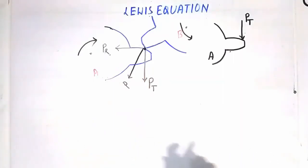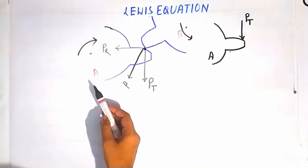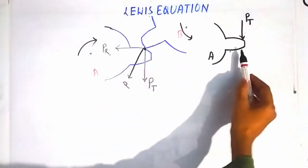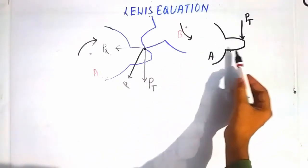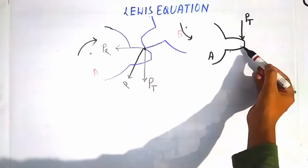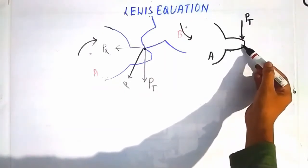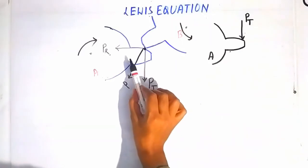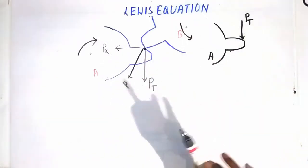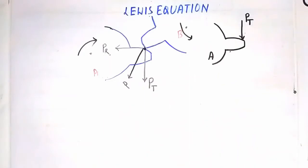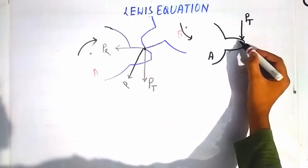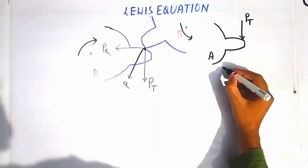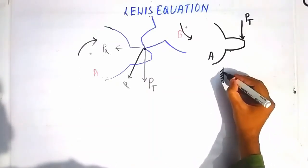The tooth of gear A is taken here separately. PT is acting upon this gear tooth in the downward direction, and we are neglecting PR and taking only PT in our discussion. We are now considering this tooth as a cantilever beam.